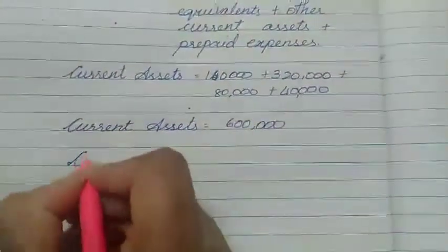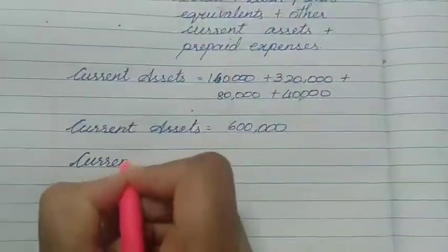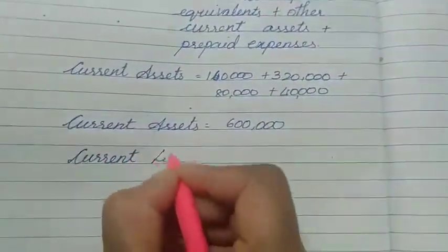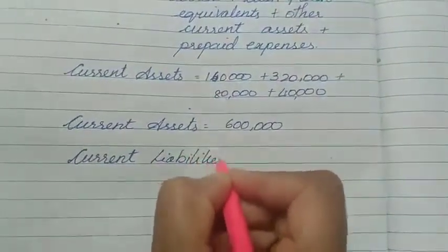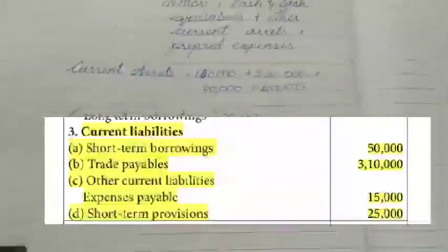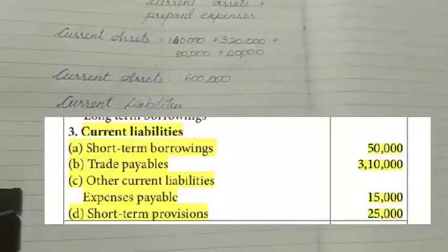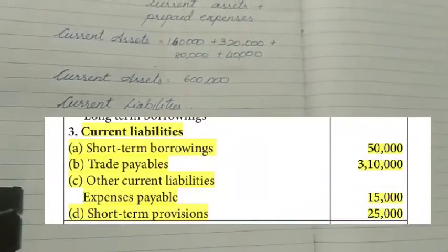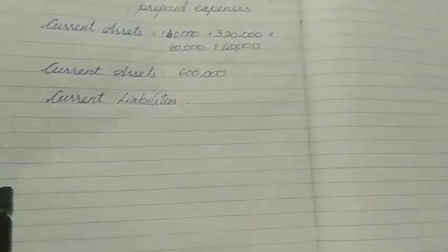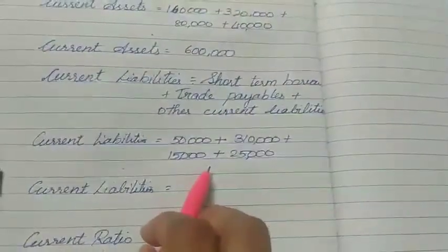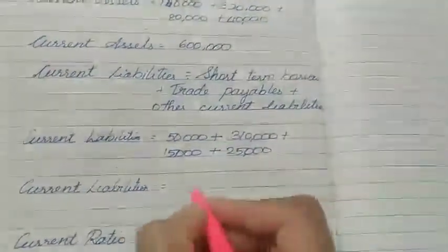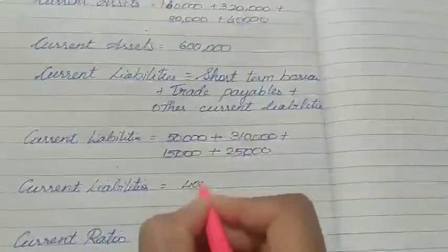Now let us move on to current liabilities. Current liabilities are the items which are given to you in the balance sheet. I am going to write them down and sum them up. I have written the current liabilities items and their values, and when I add them up, I get a total of 4 lakhs.